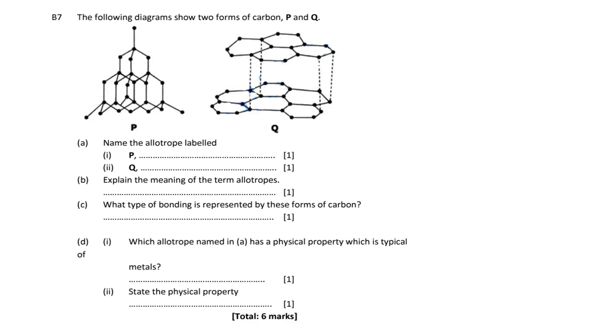Then name the allotrope labeled P and Q. So to name this P and Q, you know that allotropes are just molecules that consist of atoms of one element but having different structure and geometric shape. As you can see, the shapes are different, so carbon exists in two forms.